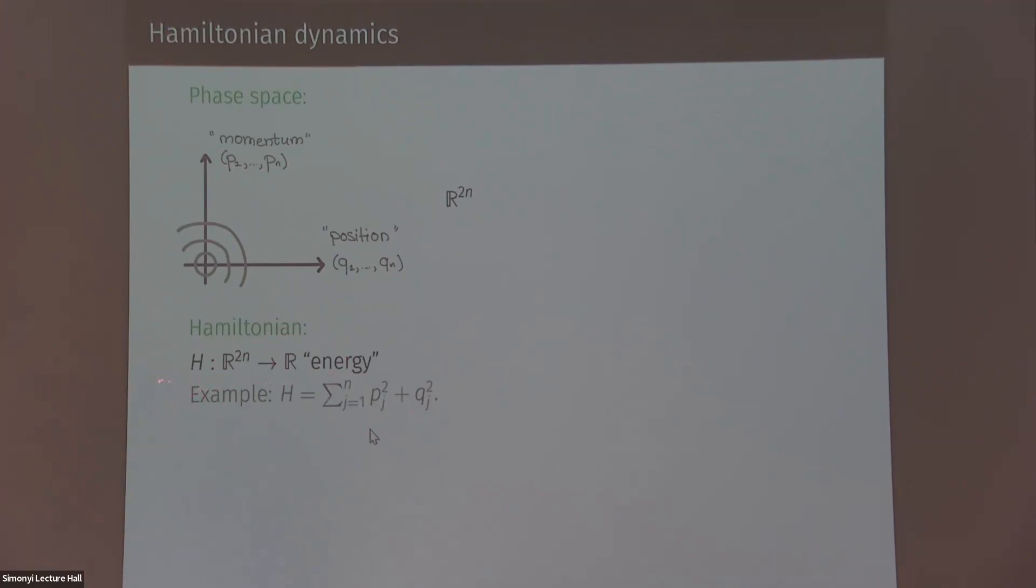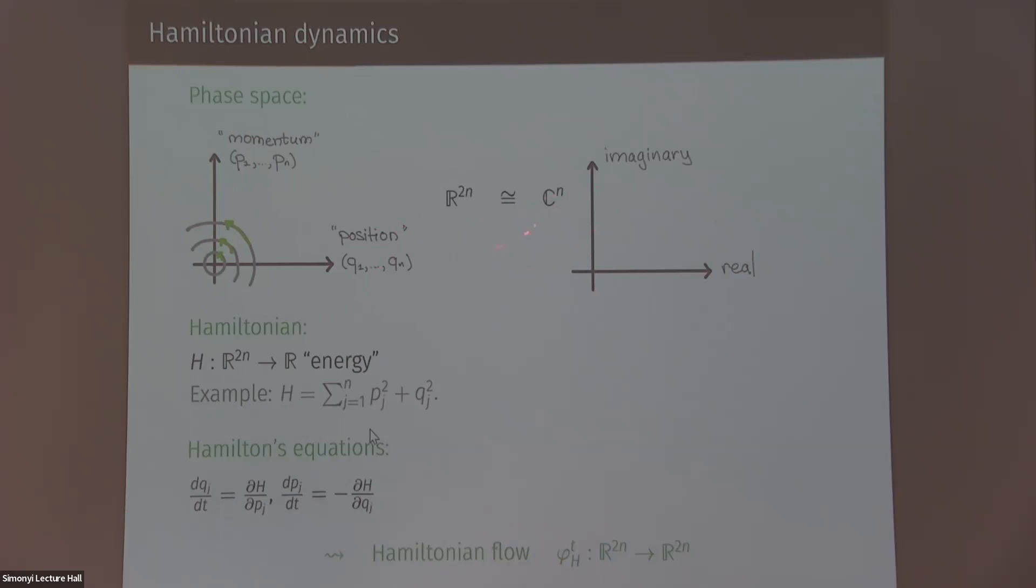Once you have such a function that basically tells you what is your physical system, you can write down a system of ODEs called Hamilton's equations. And then if you solve these ODEs, you get a flow called Hamiltonian flow. And this flow basically represents the physical motion of your system. Now, if you look at this R to 2N, you can identify it with CN.